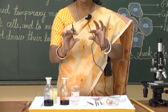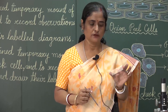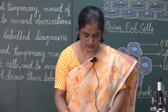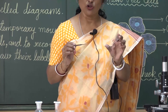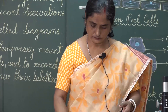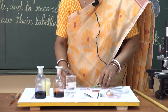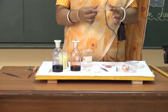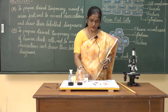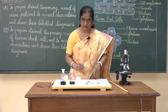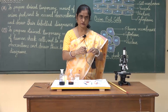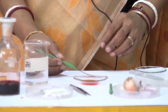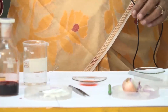Now, this is the slide — hold the slide always by the edges. You should not put your fingers inside, otherwise fingerprints will come on the slide. Then transfer the stained onion peel material with the help of a brush. The peel has a tendency to roll, so we have to spread it out with the brush. Then take a cover slip and place it on the material very gently so that there are no air bubbles.